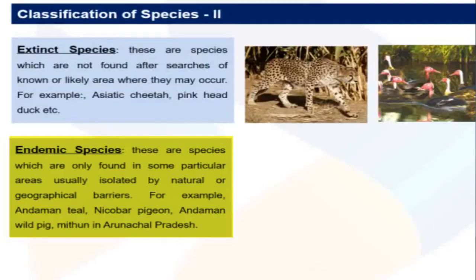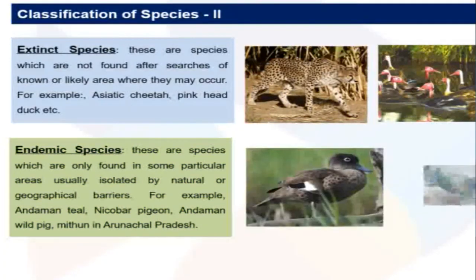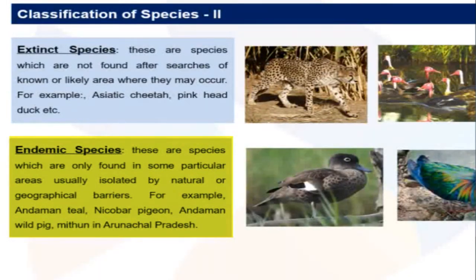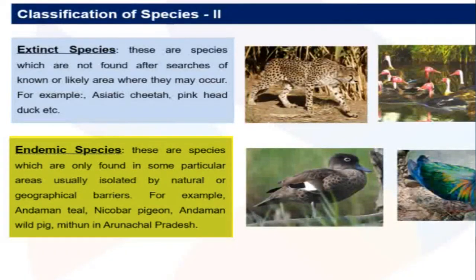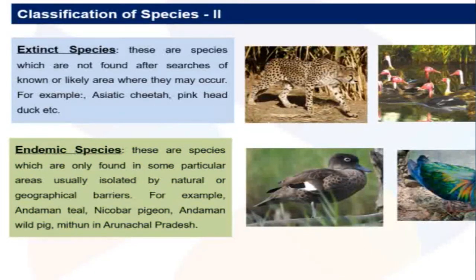The last and sixth type is endemic species. These are species which are found only in some particular areas, usually isolated by natural and geographical barriers. Examples include Andamani teal, Nicobar pigeon, Andamani wild pig, and Mithun in Arunachal Pradesh — their very names reflect how specific they are to their regions.